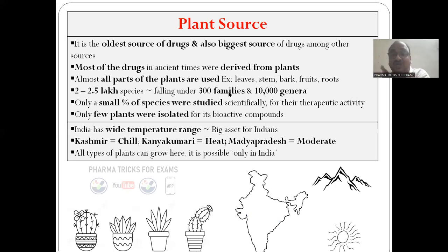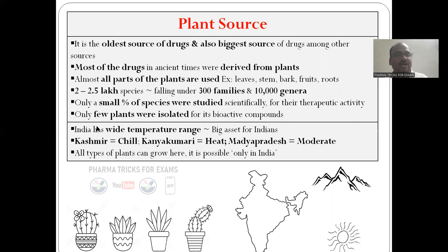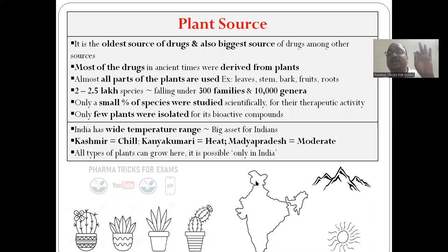Almost all parts of the plants are useful: leaves, stem, bark, fruits, roots. There are 2.25 lakh species of different plants which fall under 300 families and 10,000 genera. Only a small percentage of species were studied — remaining scope is still a big scope for the subject of pharmacognosy. Only a few plants were isolated. India has a wide temperature range. If you see the Himalayas, we get a very chill temperature, and the plants which grow in that temperature can be found there. Whereas, if you come to Kanyakumari, it is very sunny, and in the Madhya Pradesh region, you will get a moderate temperature.